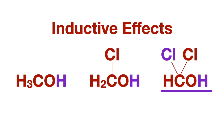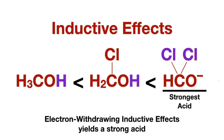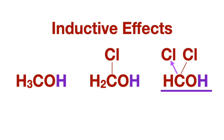The third compound has two chlorines attached, which is twice the electron-withdrawing effect, once again pulling electrons away from the oxygen, making it even more partially positively charged and even less likely to hold on to a partially positive hydrogen, therefore more easily releasing it as a proton and less likely to rebond with a proton, making it the strongest acid of the three. So having electron-withdrawing effects in an acidic compound makes it a stronger acid, due to having more electronegative atoms than the carbons or other atoms in the compound.